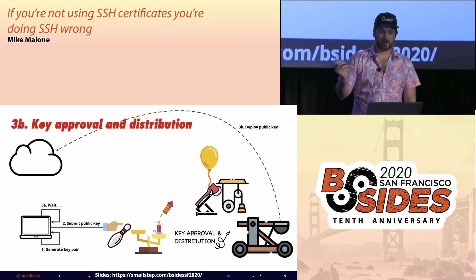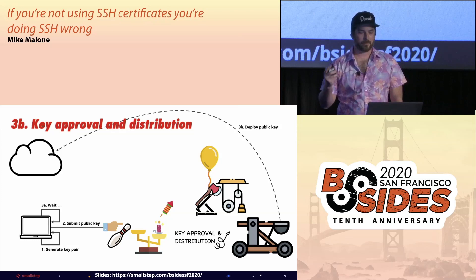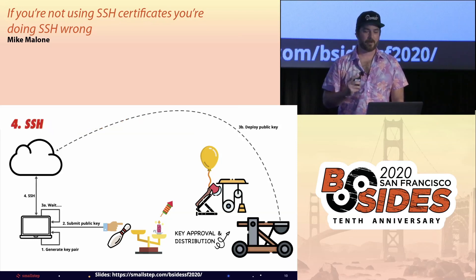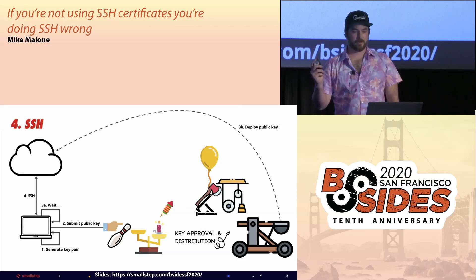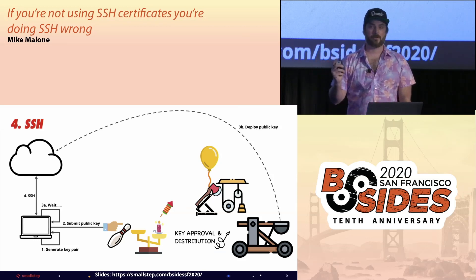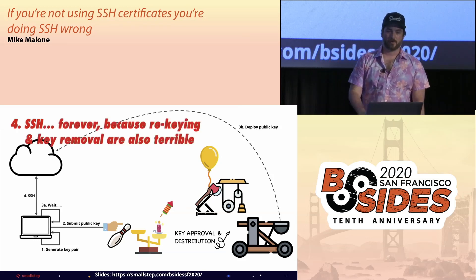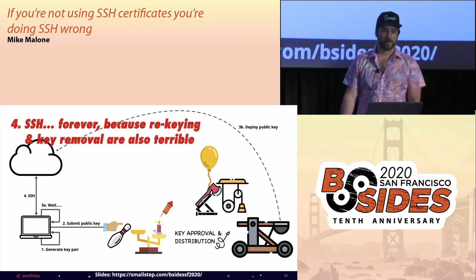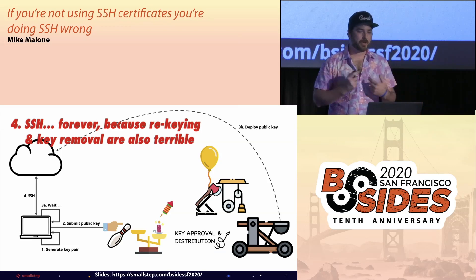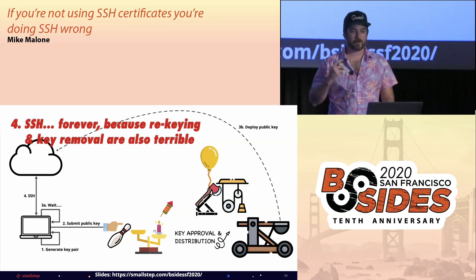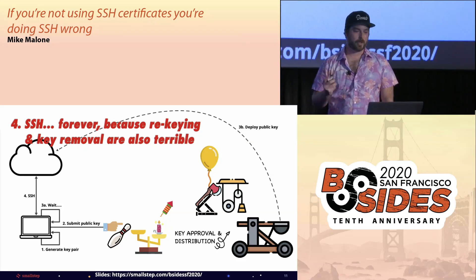Once that's done, the admin will close your ticket and notify you that you now have SSH access, and finally you can SSH. You can keep SSHing using the same credentials forever because user onboarding and offboarding is typically the only time keys are updated. Rekeying requires running back through this whole process again, so people don't do it.